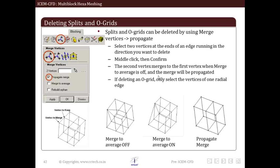Among all these, propagate merge option is frequently used. Remember that first selected vertex will be fixed and the other will propagate towards the first one to merge. If we want to delete an O-Grid, we only have to select vertices of one radial edge. The O-Grid will be removed. We can see this operation as illustrated in figure shown. We have to remember the order of vertex selection.